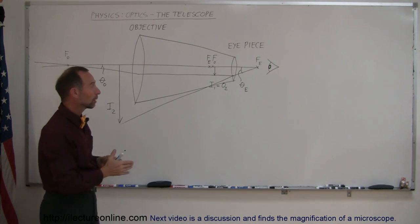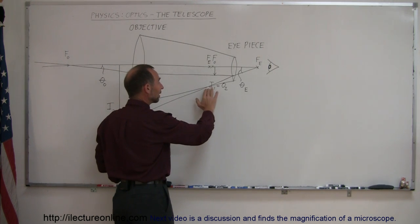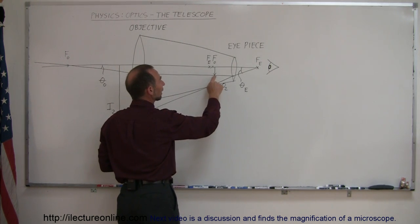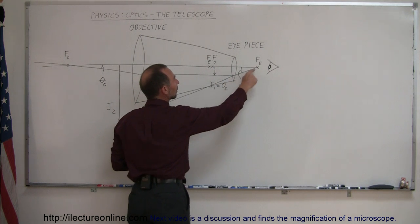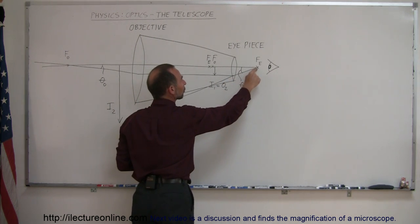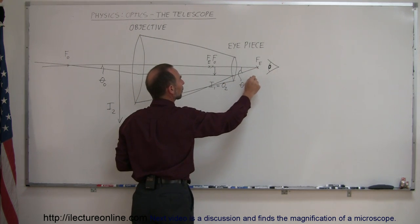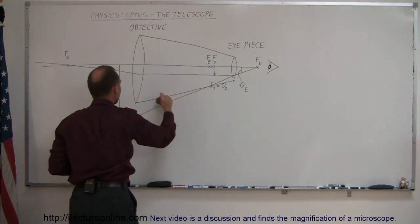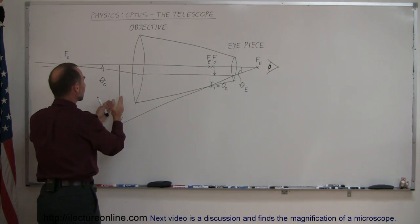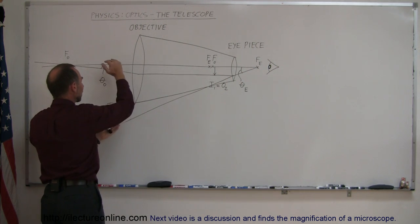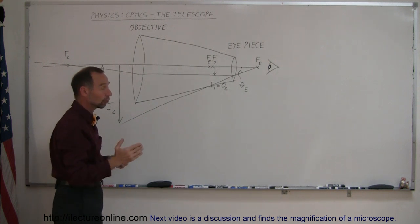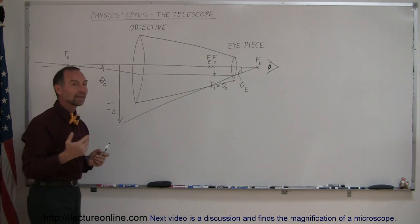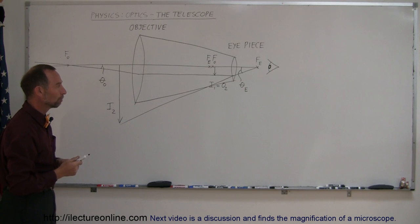Then that image becomes the object of the second lens. You can see that the ray will then go through here, bend down to the focal point right here, and the observer sees that ray coming from down here and forms in their brain an image that is much larger — a virtual image — and that offers the magnification of the telescope.